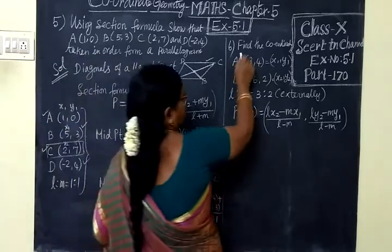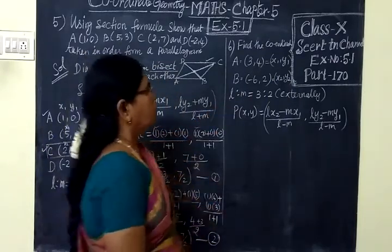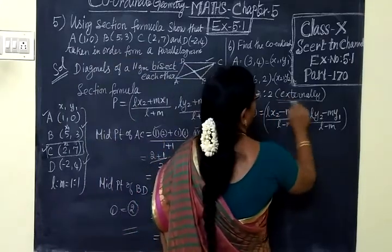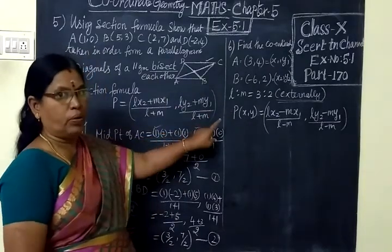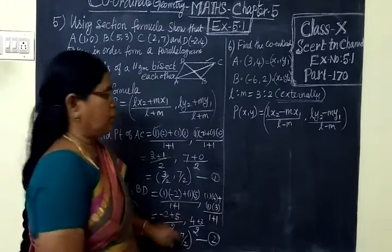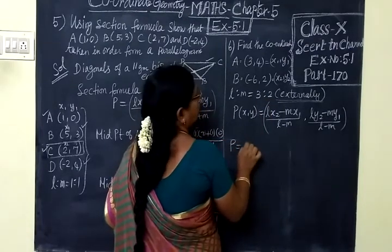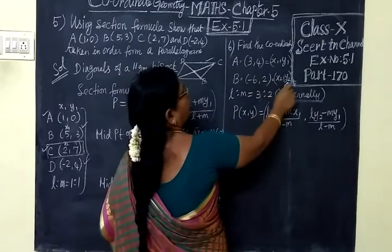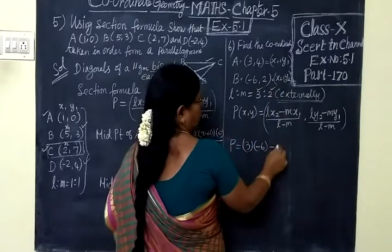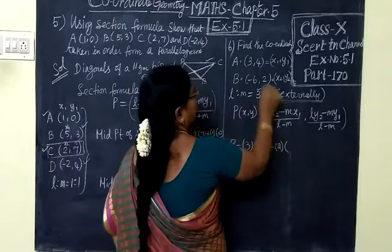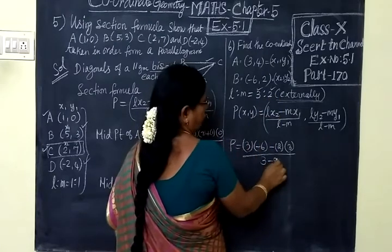Now go to the 6th question. Find the coordinates. Point A to point B, L is to M. Now externally. Externally means minus. Internally means plus. Externally means minus. If they give it, it is meant for internally. Now we substitute. So L is what? 3. P equal to 3, X2 equal to minus 6. Minus M, M is 2, X1 is 3, by L minus M, 3 minus 2.